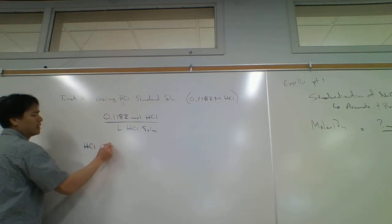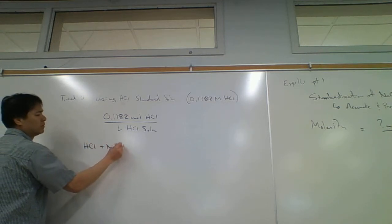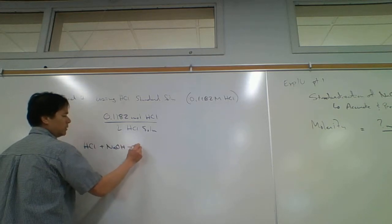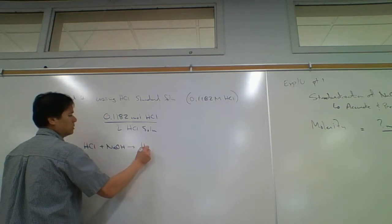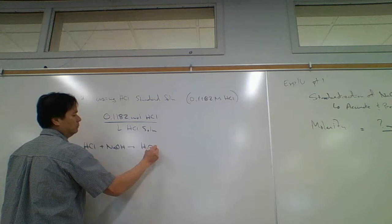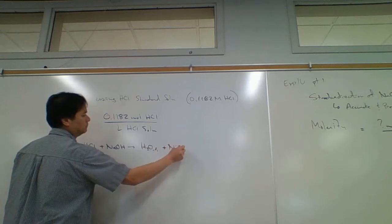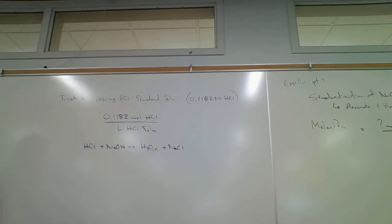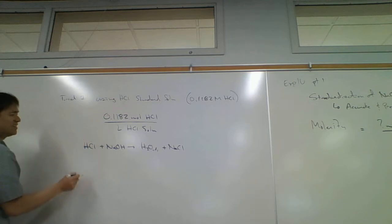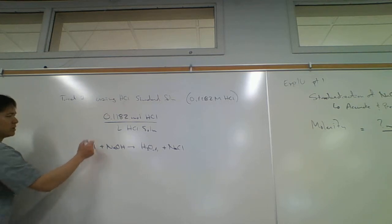We know that the reaction goes like this: one mole of HCl reacts with one mole of sodium hydroxide to produce salt and water. This is a double replacement reaction, or acid-base type reaction. This is going to be the way we do the stoichiometry for solutions.